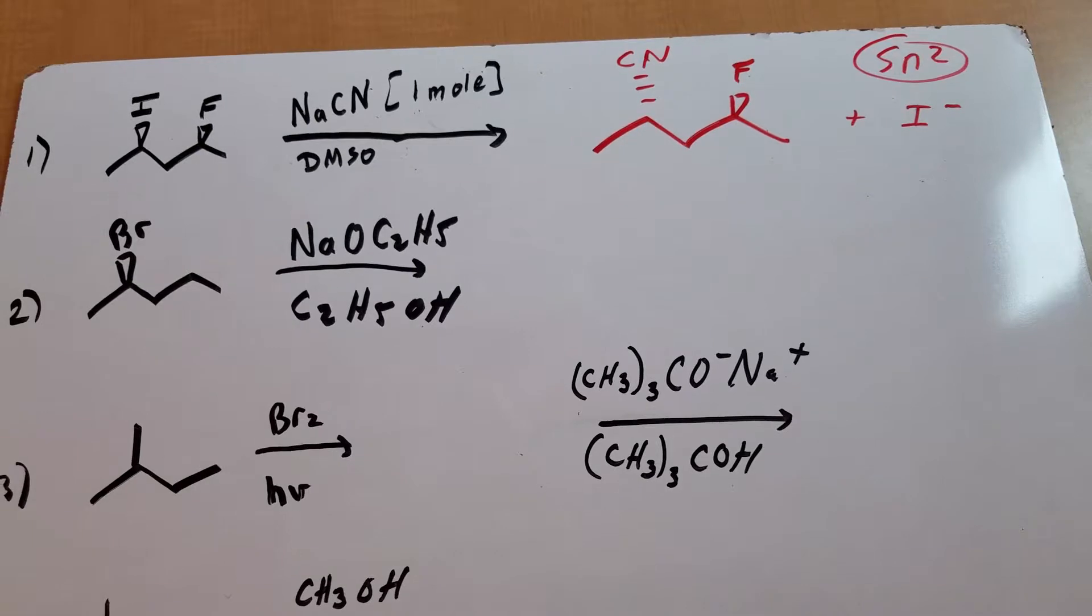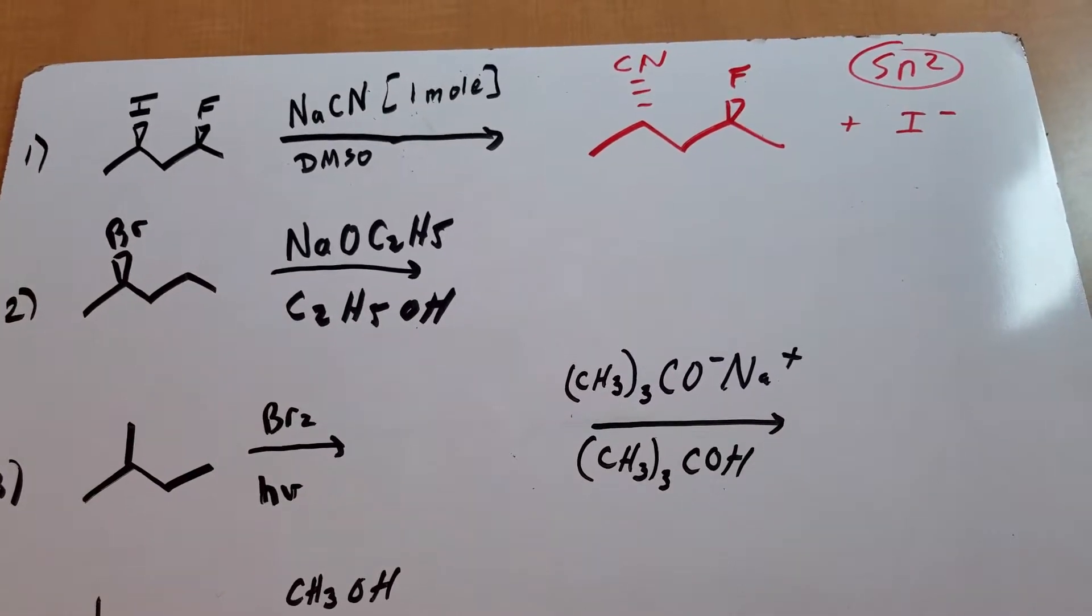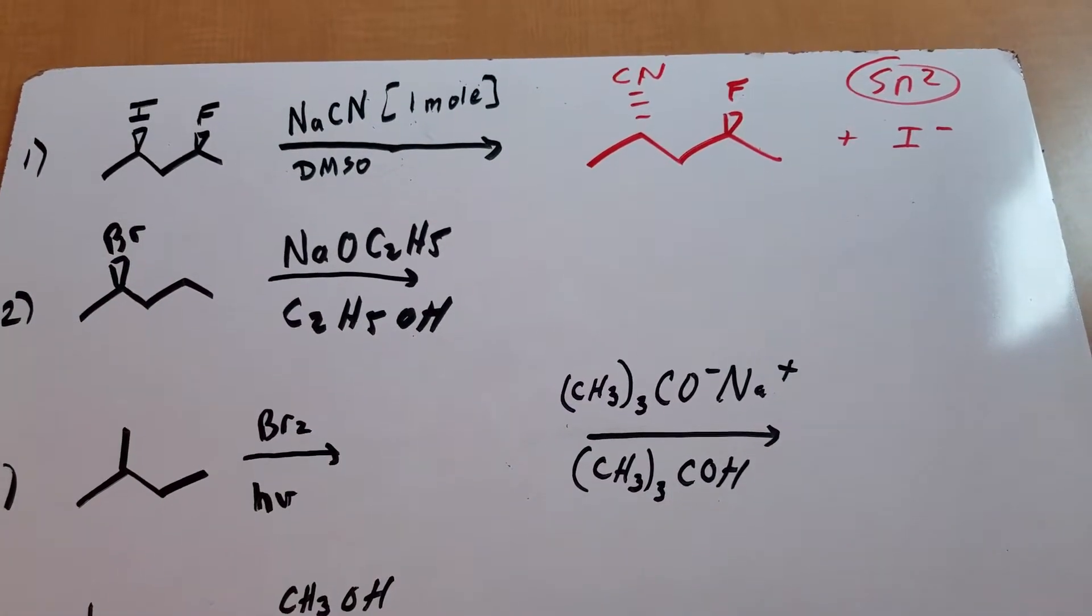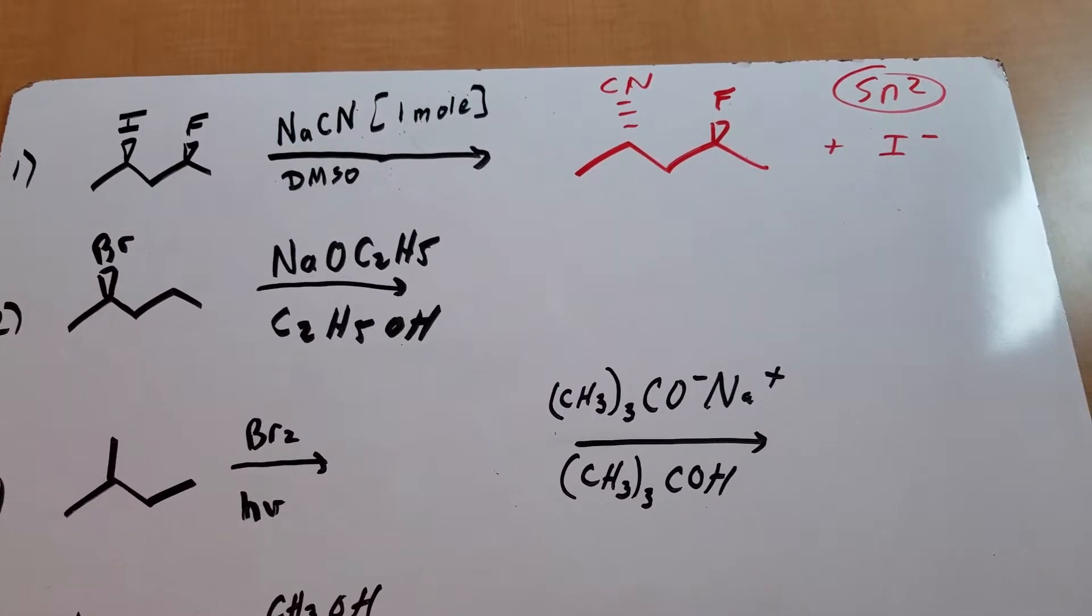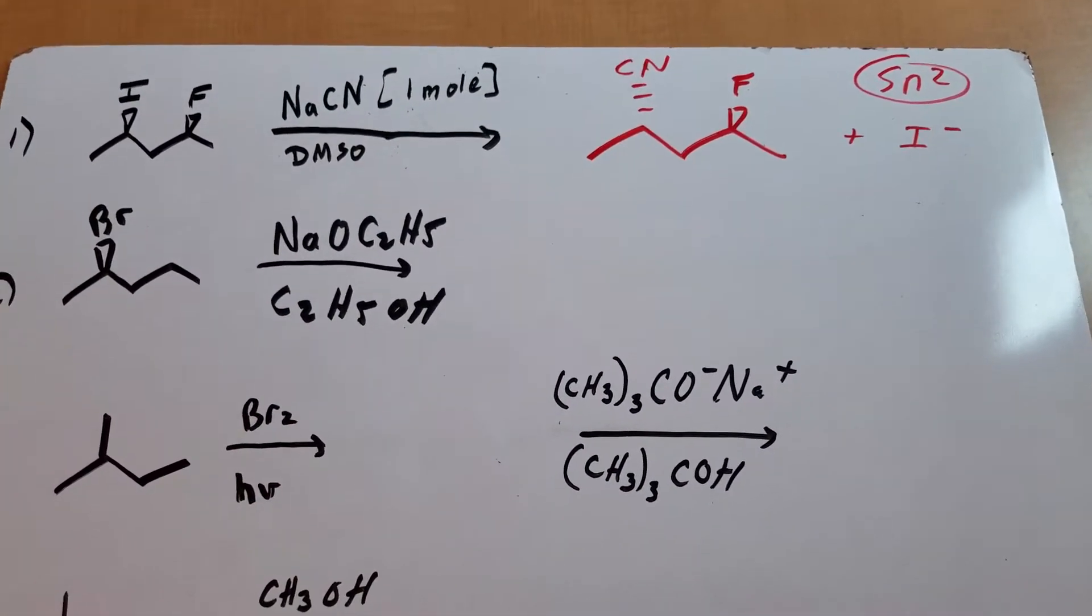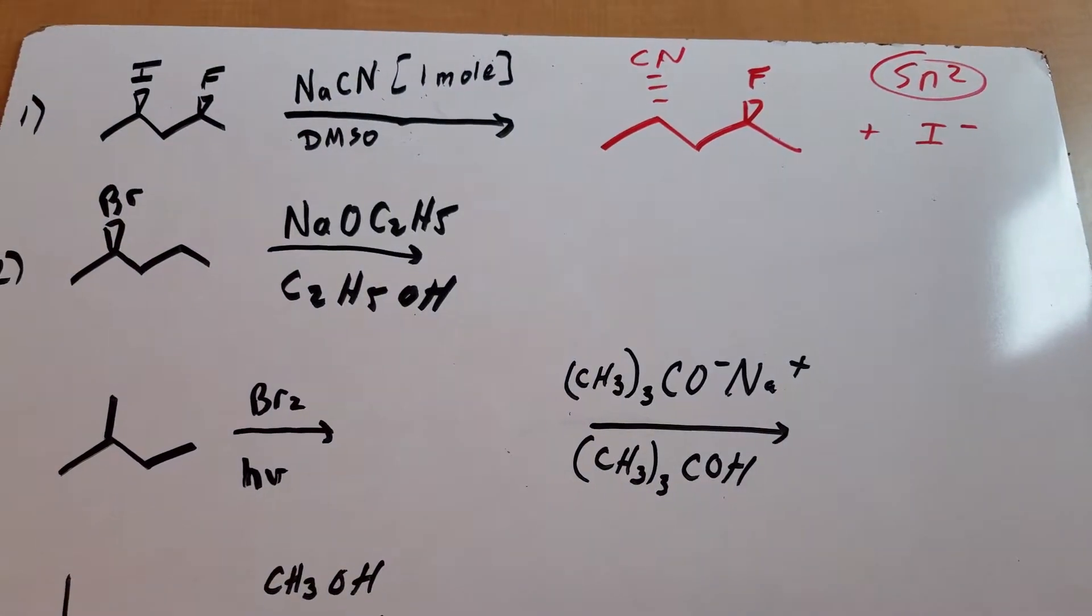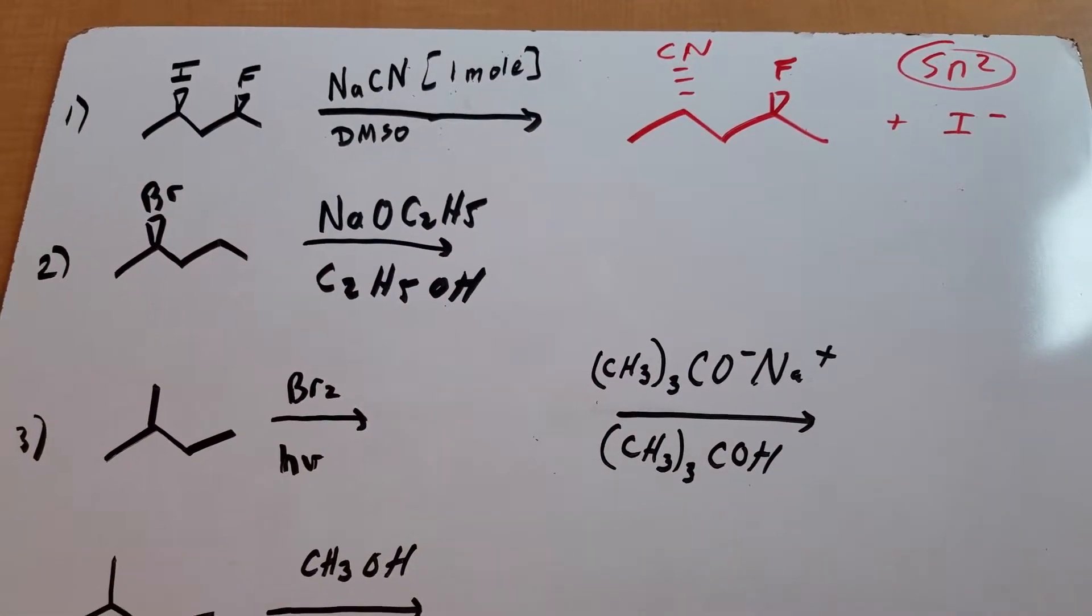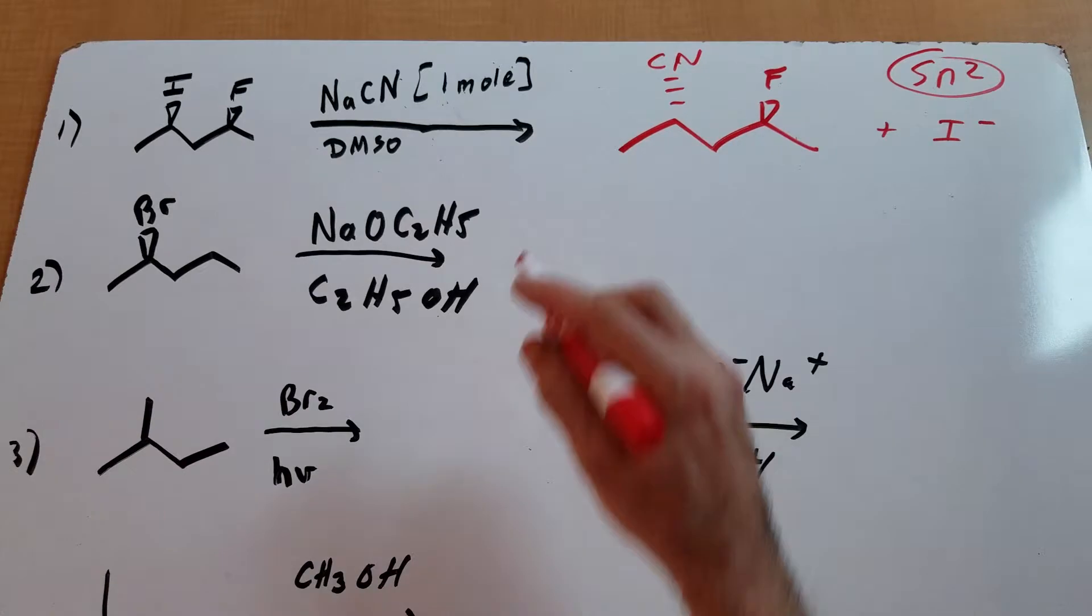In this example, this is sodium ethoxide. If you ever see a secondary or a tertiary halide with sodium ethoxide or sodium methoxide, even sodium hydroxide, almost certainly it's going to be an E2 reaction.